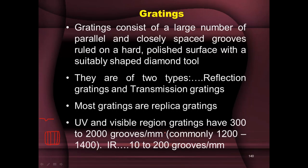UV and visible region gratings have 300 to 2,000 grooves per millimeter, and commonly around 1,200 to 1,400 grooves per millimeter. A millimeter is the smallest division on your scale — within that, you have to draw 1,200 lines accurately, all to the same depth, the same angle, the same spacing, and all parallel to one another. That's why making master gratings is quite difficult, requiring very sophisticated technology and hence being expensive. That's why replica gratings, created from original gratings, are generally used in instruments.